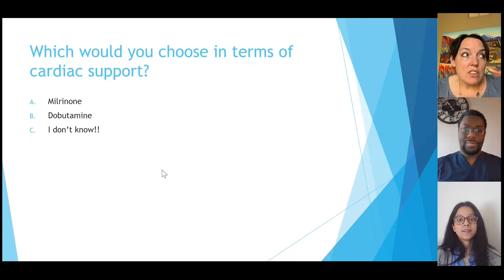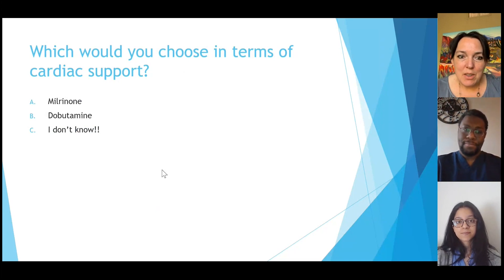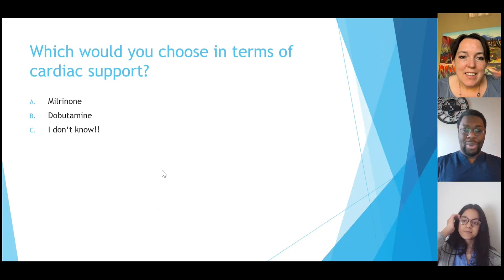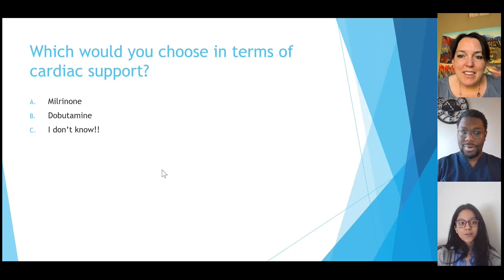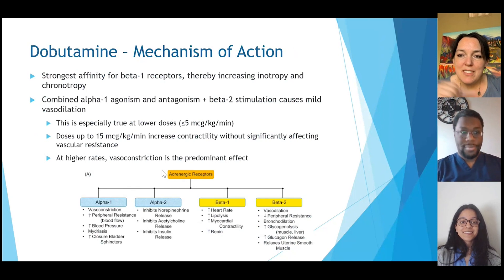So which would you support in terms of cardiac support? This is what we're here to talk about today — inotropes and inotrope selection. What do each of you think? I think I would use milrinone. I think I would opt for dobutamine in this situation. All right, let's take it step by step. Why don't we start with dobutamine — why would you choose dobutamine?